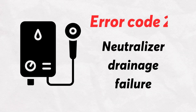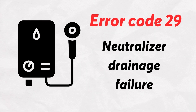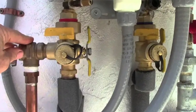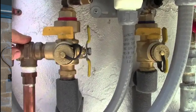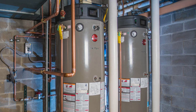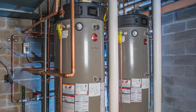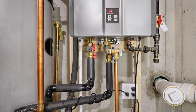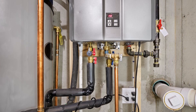Rheem Tankless Water Heater Code 29 is an error code that indicates a neutralizer drainage failure. The error code indicates that the neutralizer or drain is clogged up. The neutralizer's main function is to drain condensate away from the heater. The unit flashes the 29 error code once the neutralizer and drain are blocked up, to prevent flooding in the burner.